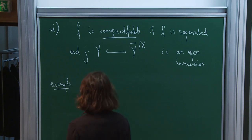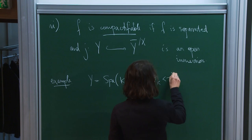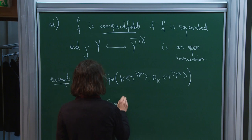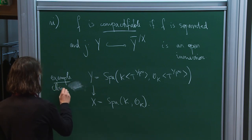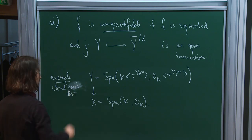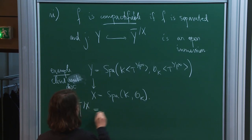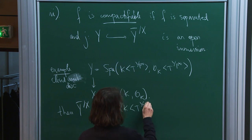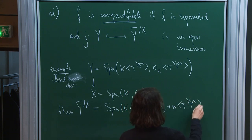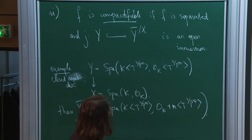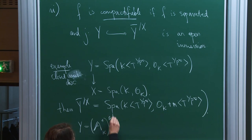For example, if Y is the adic spectrum of the closed unit disk mapping to X, it's not quite proper as an adic space. So Y-bar over X is this space plus a maximal ideal at infinity. On the other hand, if Y is A^1 over K as an adic space mapping to X, then Y-bar over X is just equal to Y. This sounds strange because you would think one should compactify into P^1, but that's not what happens.